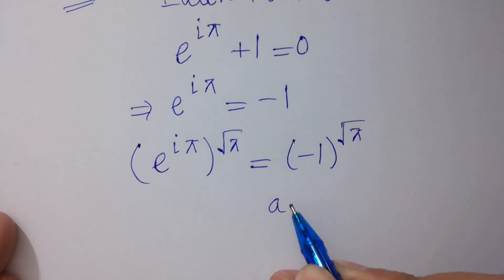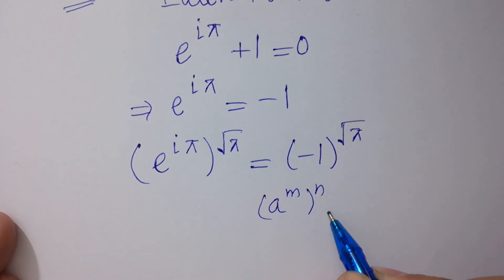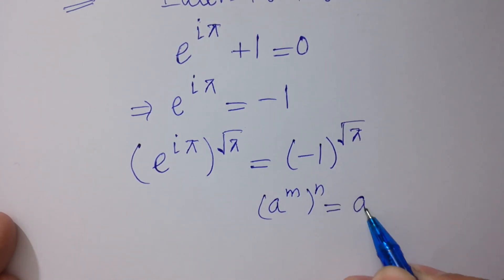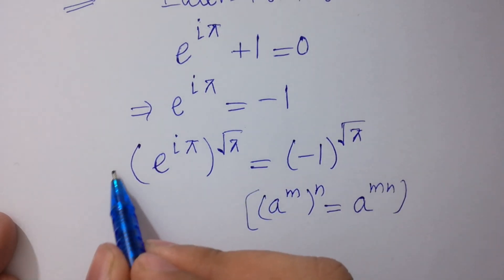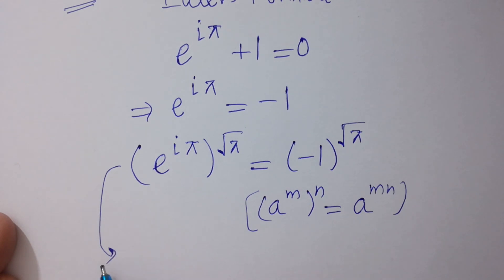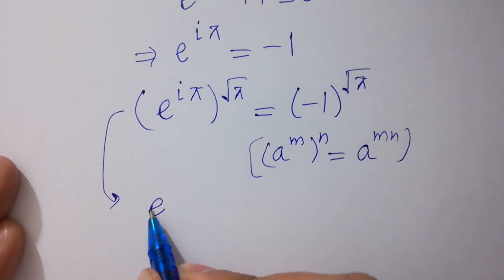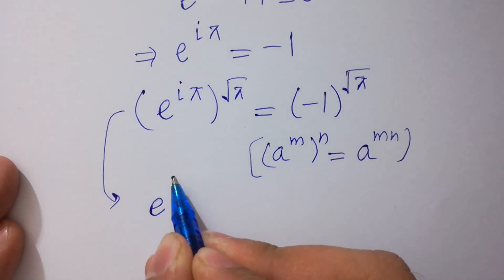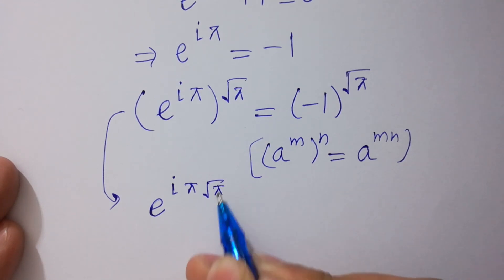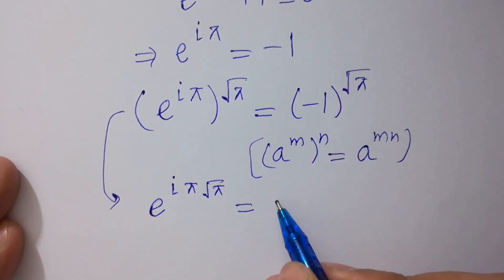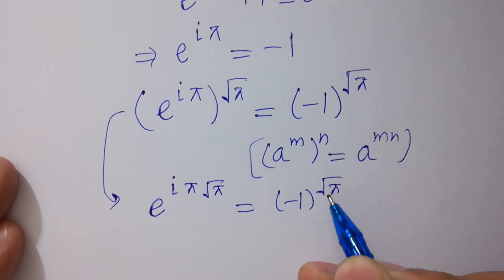Since the rule states that a to the power m, to the whole power n, equals a to the power m·n, it follows that e to the power i·pi·square root of pi equals minus 1 to the whole power square root of pi.